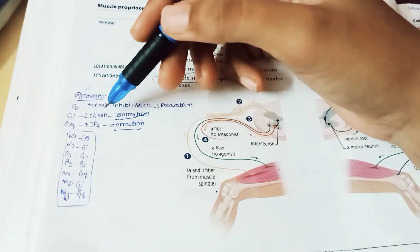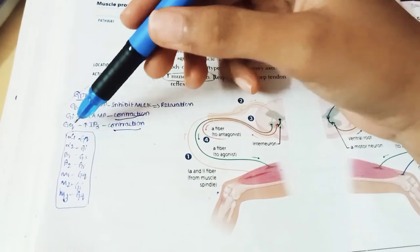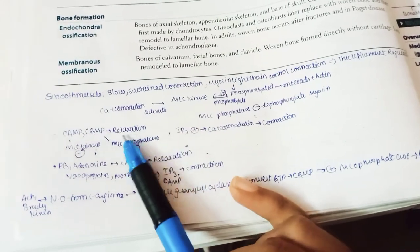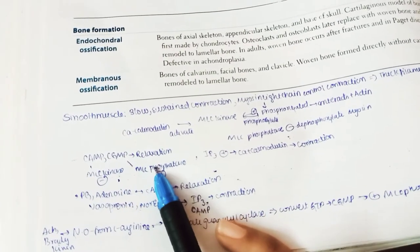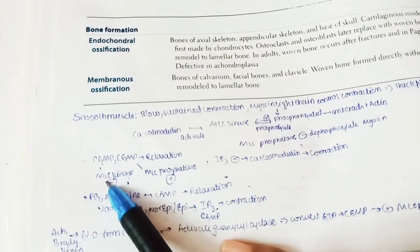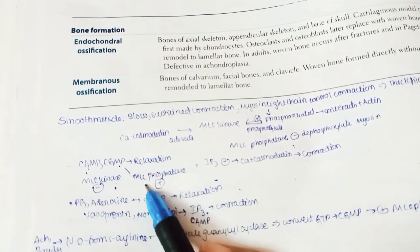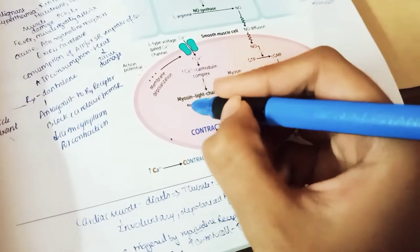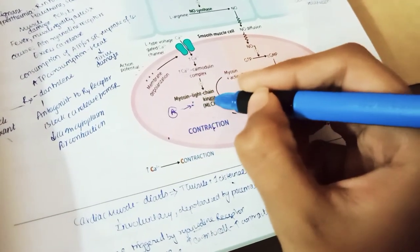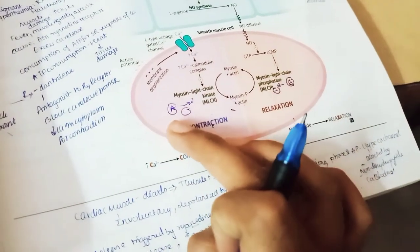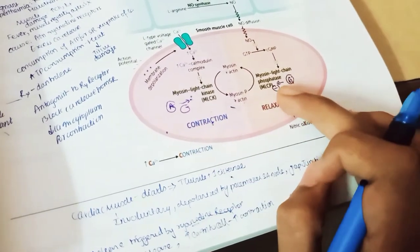Summary: Gs increases cyclic AMP → relaxation; Gi decreases cyclic AMP → contraction; Gq increases IP3 → contraction. Both cyclic AMP and cyclic GMP lead to smooth muscle relaxation but by different pathways. Cyclic AMP inhibits myosin light chain kinase (MLC kinase); cyclic GMP inhibits myosin light chain phosphatase (MLC phosphatase).